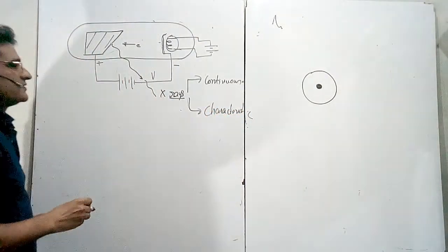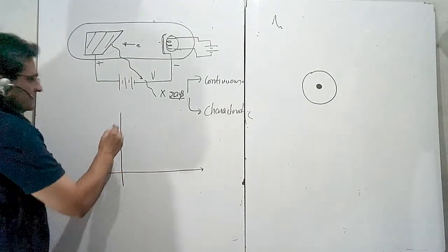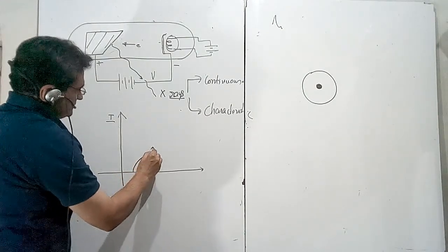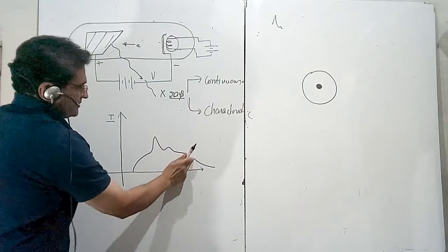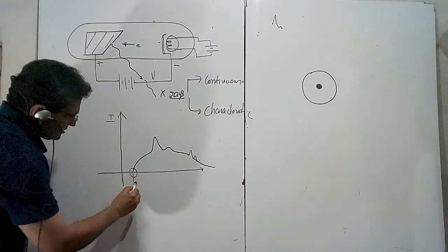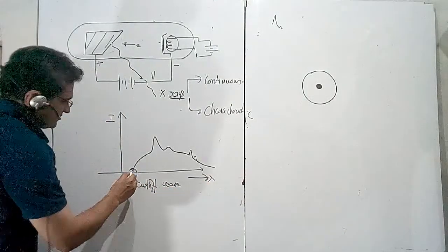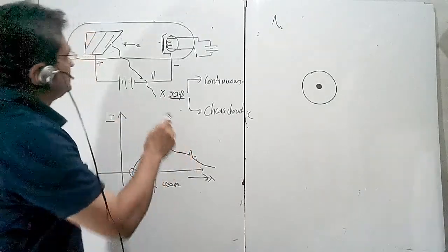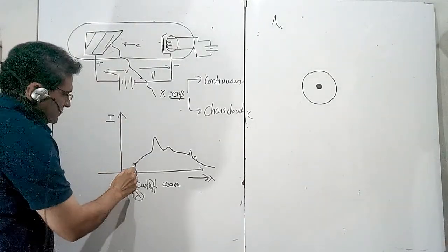There are two types of X-rays. When we plot the graph for X-rays, we show intensity on the y-axis. The graph starts like this and this is how it is shown. In the question you can be shown some peaks here as well. Now this is the cutoff point — the cutoff wavelength — and here I am plotting the wavelength. Questions come on this cutoff wavelength.